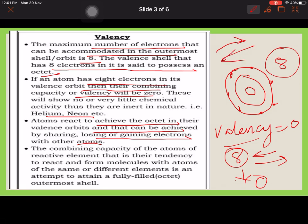The combining capacity of the atom of a reactive element, that is their tendency to react and to form molecules with atoms of the same or different elements in an attempt to attain a fully filled outermost shell. The way they can get the 8 electrons is known as the valency.